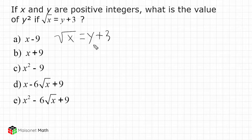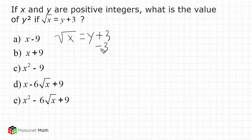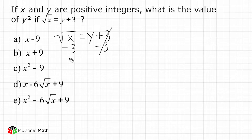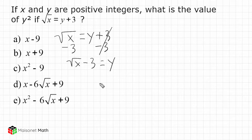In other words, we're going to get y by itself, so let's go ahead and isolate this variable. To do this, we take the positive 3 and send it to the other side of the equation by subtracting 3, because opposite integers cancel out to be nothing, but to balance the equation we have to subtract 3 from the other side. So now we have the square root of x minus 3 is equal to y.